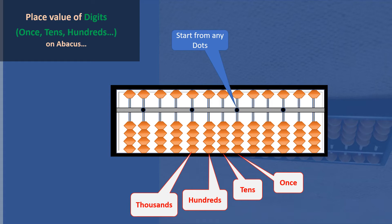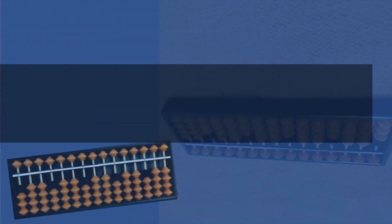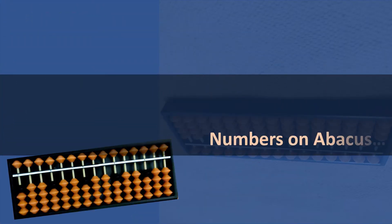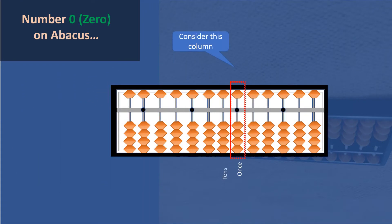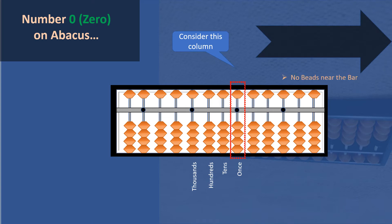This is how we identify ones, tens, hundreds, and thousands digits — where all digits will appear on the abacus. Now we'll discuss how to read the numbers. How to write zero: as you can see in the column highlighted in the red rectangle, there is no bead towards the bar, so this is called zero. If no bead is near the bar, the value is zero.